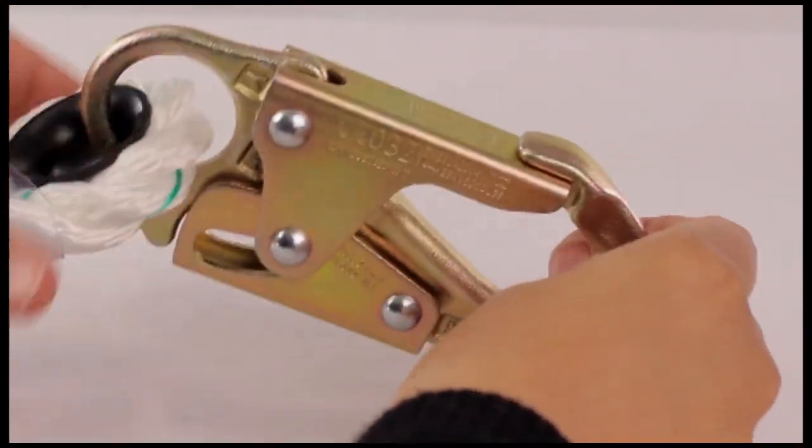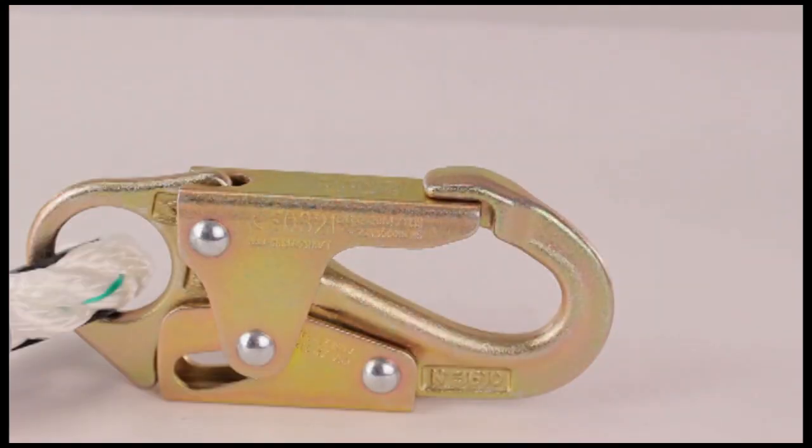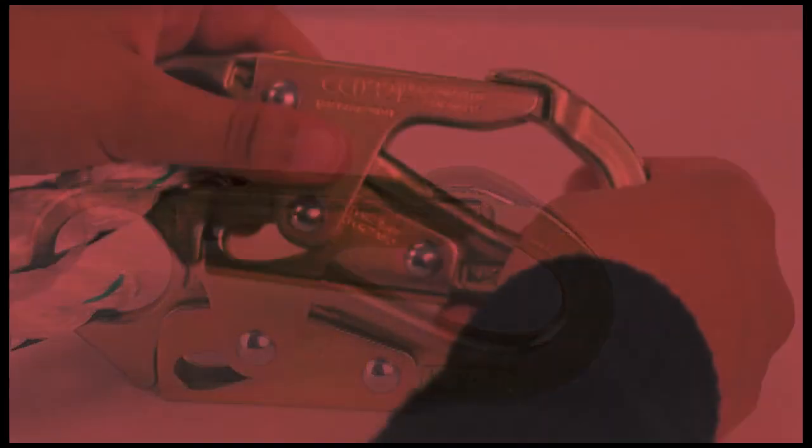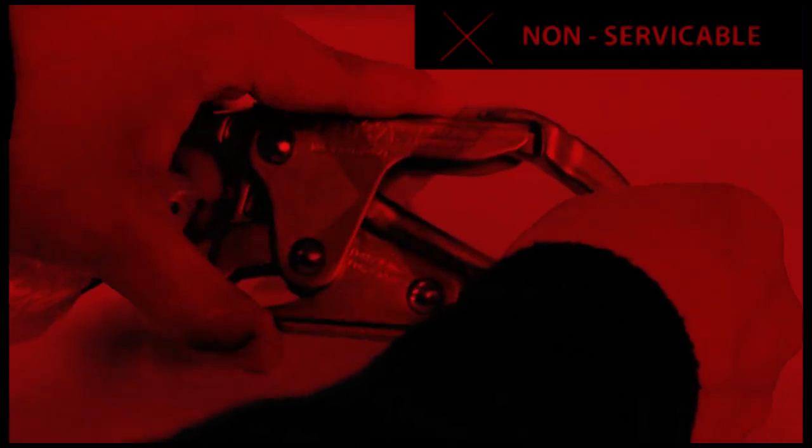Be sure the hook gates work. Hook gates should move freely and lock upon closing. If any of the mentioned conditions are present, tag and remove the parts from service. Record the inspection date and findings in the inspection log.